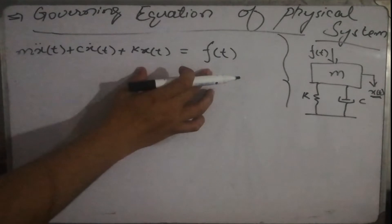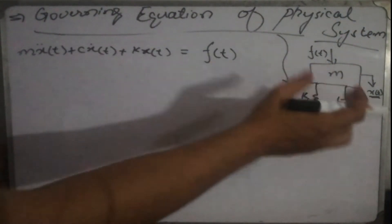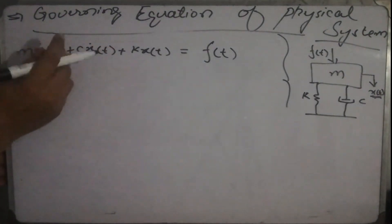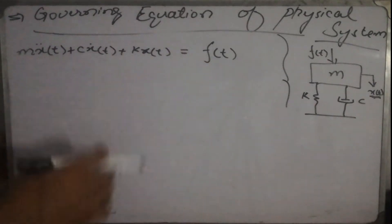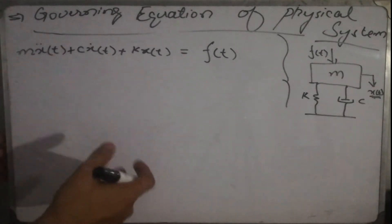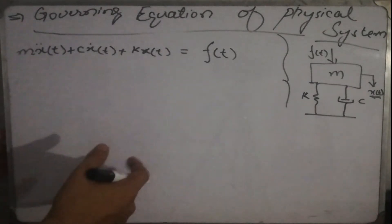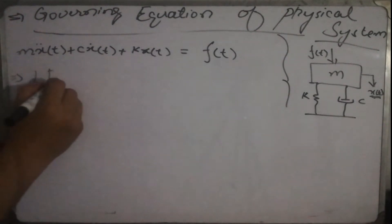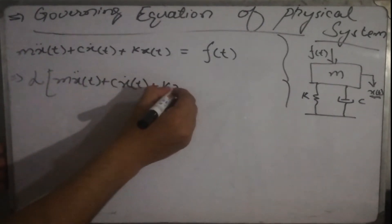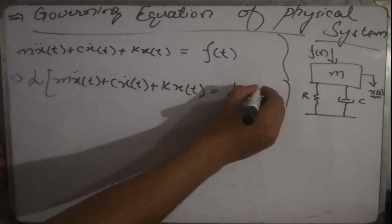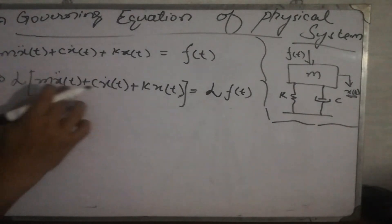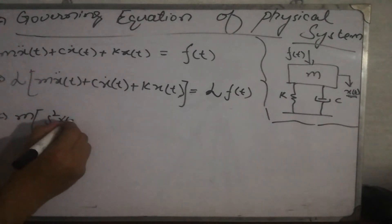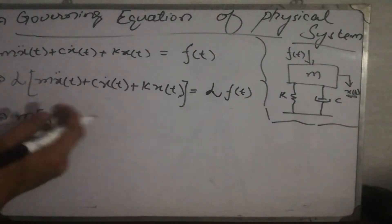Once we have the differential equation — the mathematical model of the physical system — we need to solve it for the displacement output in the time domain. To do that, we take the Laplace transform of the equation on both sides using the techniques from lecture 4. Taking the Laplace transform, the mass term becomes m·s²·X(s).